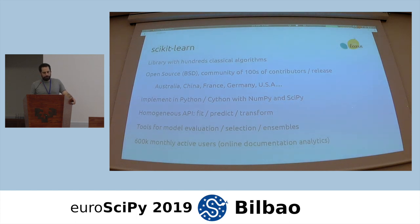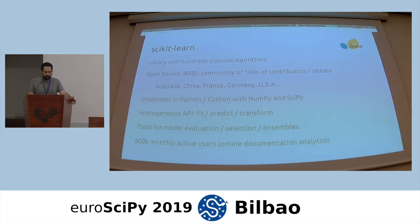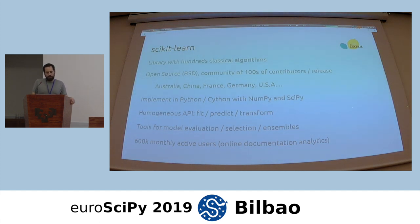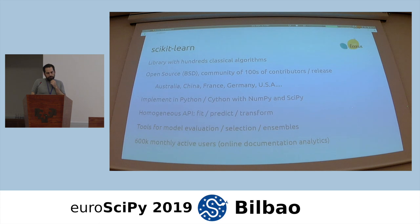There is a community of hundreds of contributors per release. We do one release every six months to one year approximately. There is a core developer team scattered around the world — in Australia, China, France, Germany, and the USA. It's implemented in Python and Cython, which is an extension to Python to have compiled extensions. We also rely a lot on building blocks of the ecosystem such as NumPy and SciPy. The main value of Scikit-learn is to provide a homogeneous, simple API with the fit, predict, and transform methods.